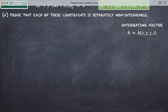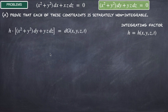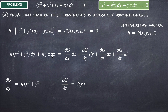We can do the same for the other equation of constraint. One can note that it is very similar and symmetric to the first — under an interchange of x and y we obtain one from the other. But let's solve it explicitly. The integrating factor H multiplied by this second equation of constraint must equal the exact differential of a function G. We recognize that del G del y equals H times x squared plus y squared, and del G del z equals H times yz. The other two partial derivatives are equal to zero.